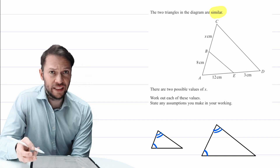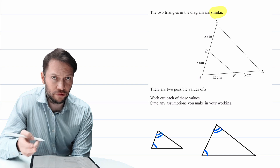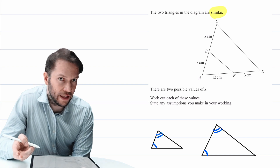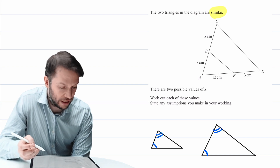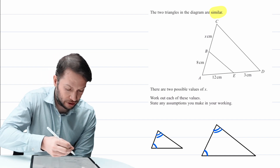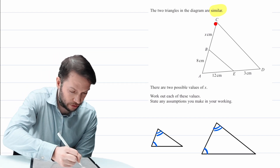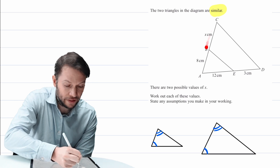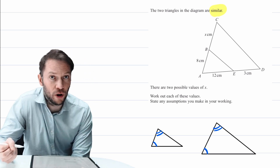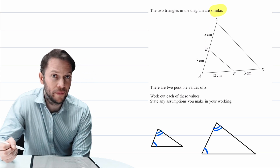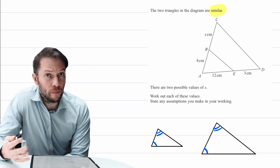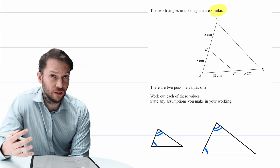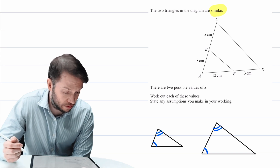What makes this question particularly hard is it seems really weird that there are two possible values of x. Surely with this triangle here and this triangle here, that's just one possible length, right? And that's what makes this question particularly difficult.